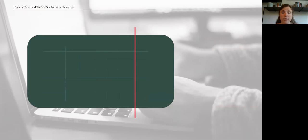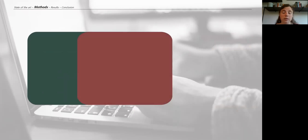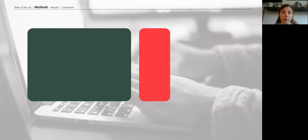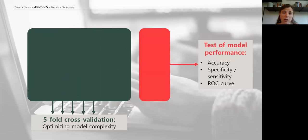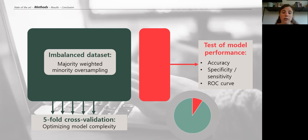Next, we of course kept about approximately one-fifth of the data apart to test our final model, and on the remaining training data set, we performed a five-fold cross-validation to optimize the complexity and the parameters of the model. I already showed you the distribution of our data. You can see that patients with somatosensory tinnitus are clearly in the minority here. To account for this imbalance in our data set, we applied a majority weighted oversampling of our minority class, so of the somatosensory tinnitus participants.